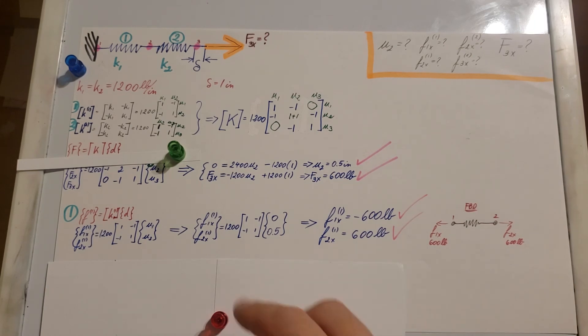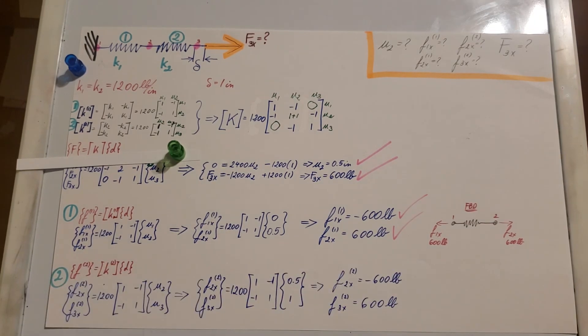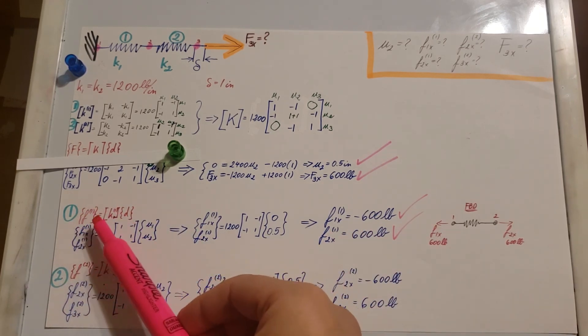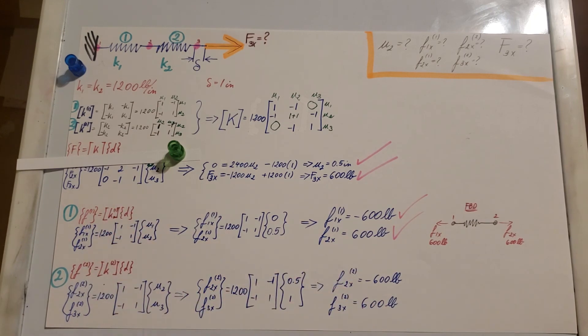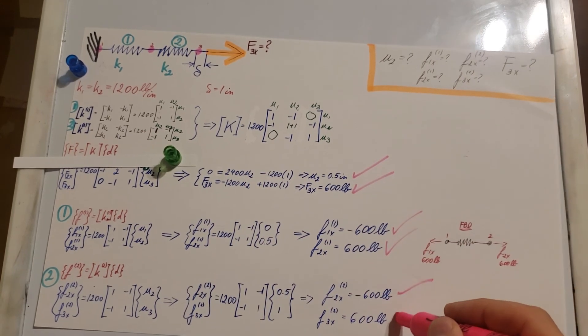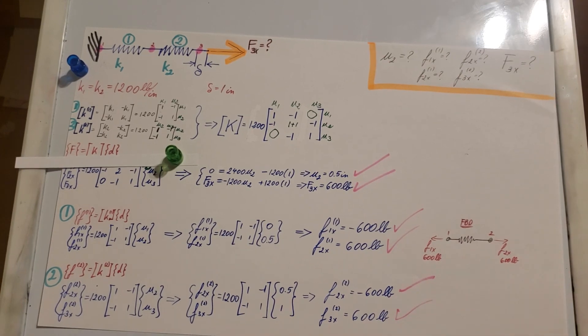All there's left is to find the forces on element 2, the exact same process that we did for element 1. F equals k times displacement, but this time for element 2. Expand this, fill it out, fill in the known, and find the unknown, and you'll find the values for element 2 as well.